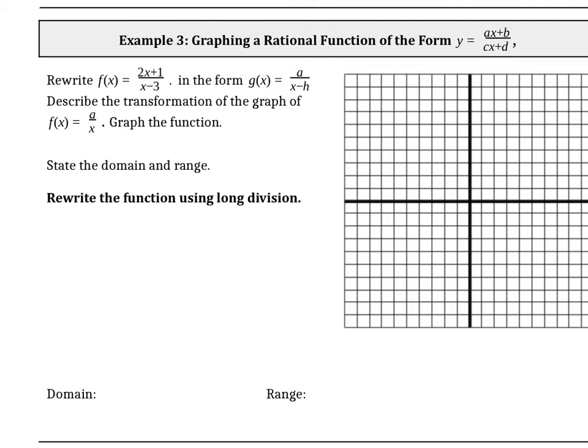In this video, I'm going to go straight into using long division to rewrite these functions and then graphing using transformations, focusing on the simple rational form a over x. We're going to rewrite f(x) equals 2x plus 1 over x minus 3 in the form g(x) equals a over x minus h plus k.